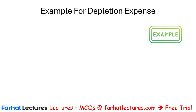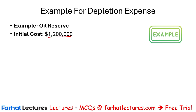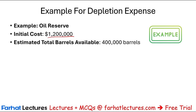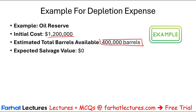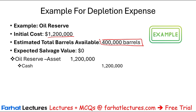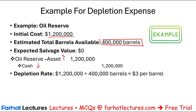The best way to illustrate depletion is to look at an example using an oil reserve. Let's assume the initial cost of the land was $1.2 million, with an estimated oil reserve of 400,000 barrels and an expected salvage value of zero. We establish an asset — oil reserve — by debiting the asset and crediting cash. Next, we compute the depletion rate: $1,200,000 divided by 400,000 barrels equals $3 per barrel.